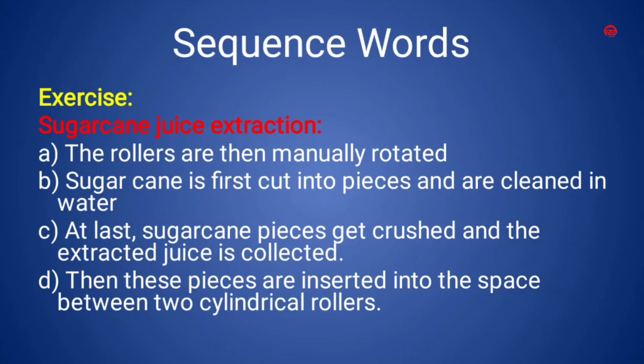The exercise is about sugar cane juice extraction. When we look into this example, we may think about jumbled sentences — the sentences are in a disordered way and we have to give them an order by using sequence words like first, next, after that, at last, then. These are some clue words which will help us to arrange the sentences in a correct order.